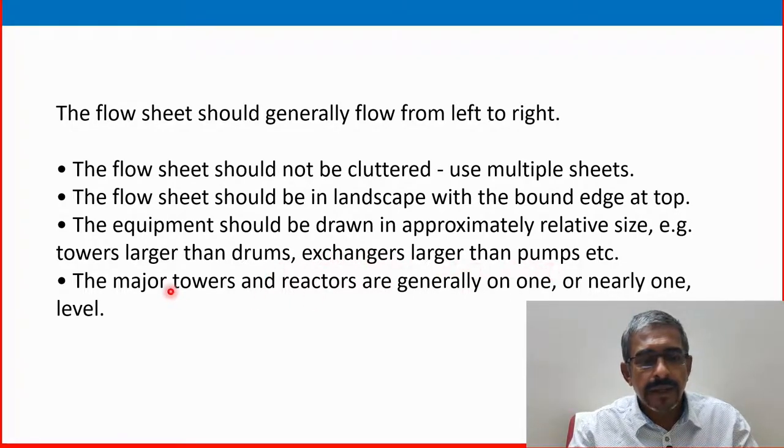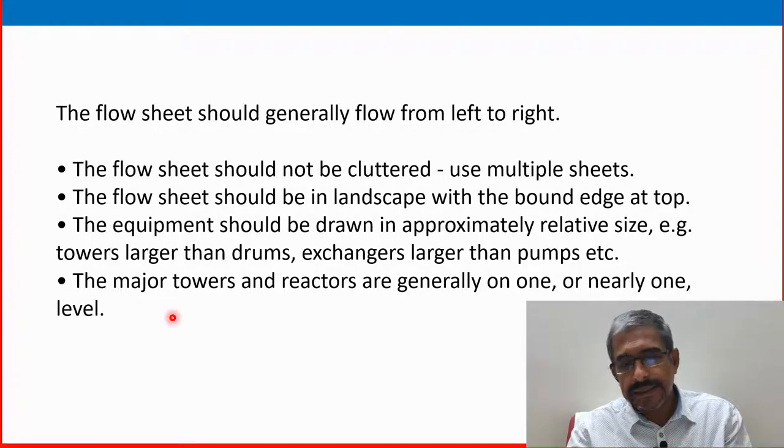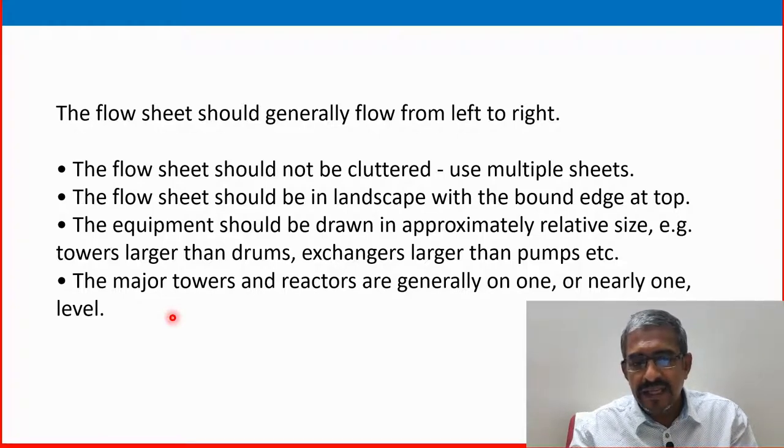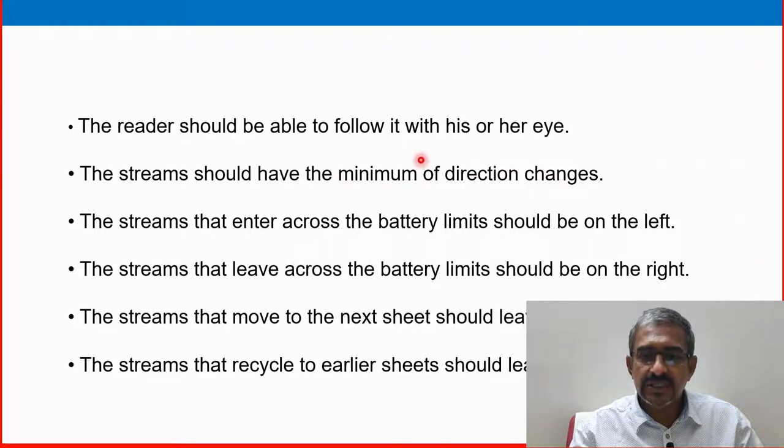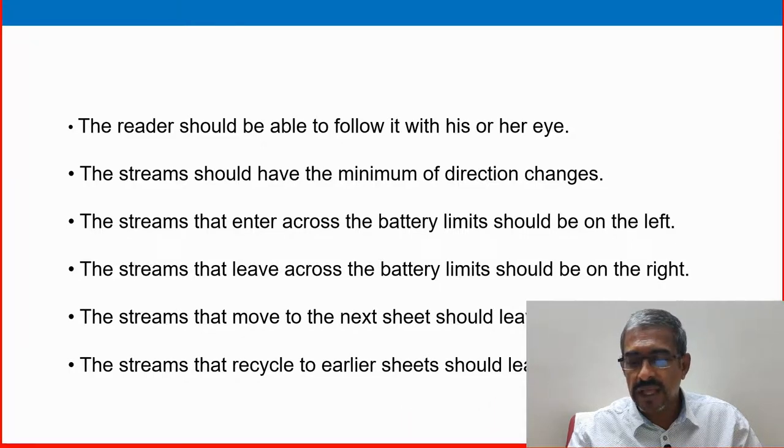That type of simple basic design features or basic information you have to provide in a proper way. The major towers and reactors are generally in one, nearly one level. The reader should be able to follow it with his or her eye. The streams should have minimum of direction changes. The streams that enter across the battery limit should be on left, which is entering from the feed, first entry point. The stream that leave across the battery limit should be on the right. The streams that move to the next sheet should leave to the right. The streams that recycle to earlier sheet should leave on the left.